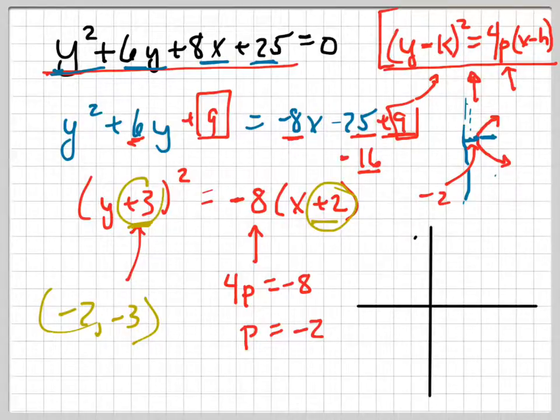Remember, you're taking the opposites of what's in there. Negative 2, negative 3 is right here. I know it opens because the y is squared, and also because the p is negative, I know it opens left.